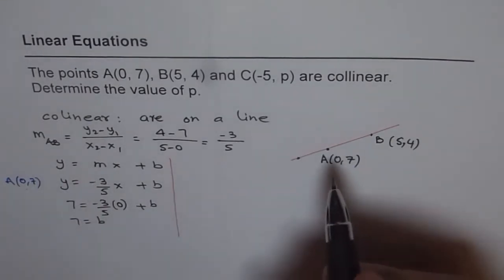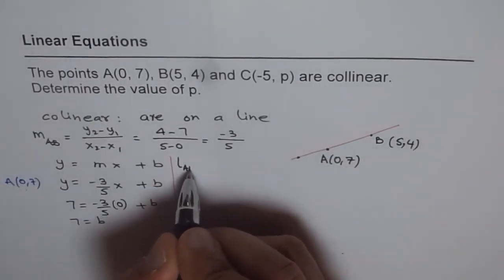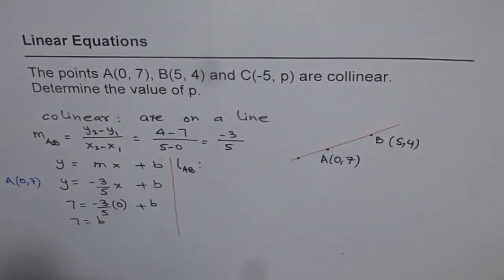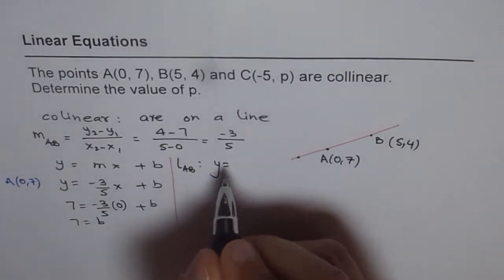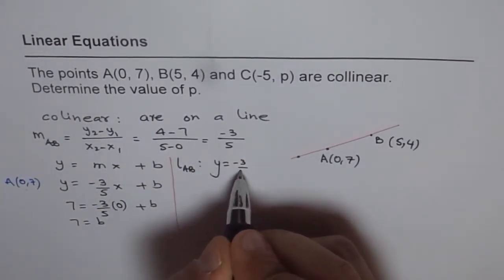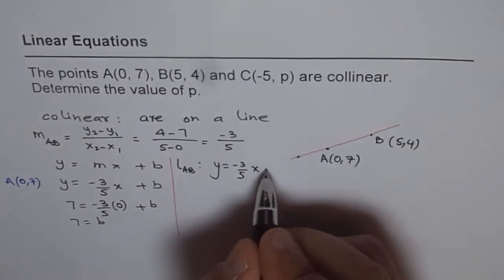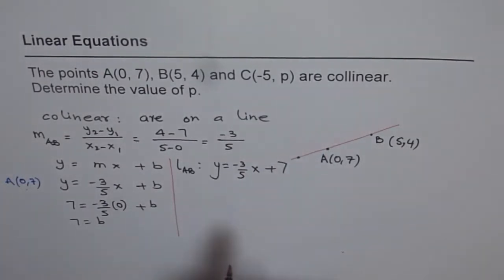So, that gives us the value of b and so now we can write down the equation of the line. So, the equation of the line AB, the line through AB is y equals -3/5x plus 7. So, that is the equation.